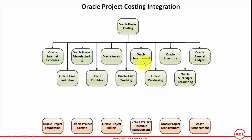Oracle Purchasing deals with contractor payments, as just explained, and iProcurement and purchasing work very closely together. You can also raise requisitions for miscellaneous items or catalog items that you would like to purchase as part of project execution, and those requisitions are used to create purchase orders. You can also create standalone purchase orders not related to requisitions for miscellaneous or asset purchases related to projects, and the costs of those purchases will be reflected in project costing.